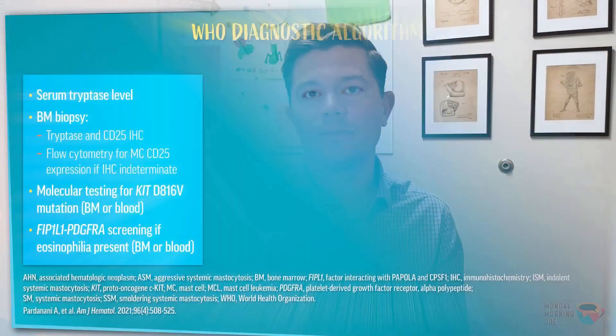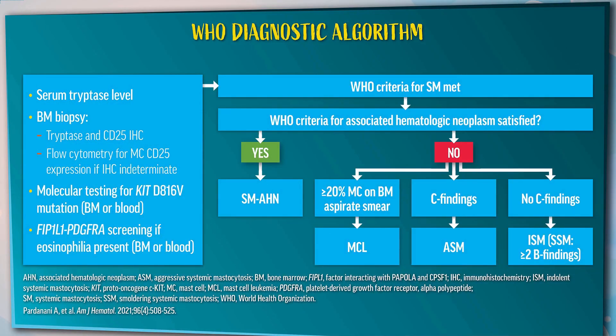The advent of KIT mutation testing allows us to document a driver mutation, which really supports this diagnosis, and you want to rule out other potential diagnoses as well. Once you have a diagnosis of systemic mastocytosis, you go down the algorithm of determining whether this is indolent or advanced. Within the category of advanced, you're often looking for the potential of an associated hematologic neoplasm — often a myeloid neoplasm, specifically things like myelodysplastic syndrome, CMML, or a myeloproliferative neoplasm.